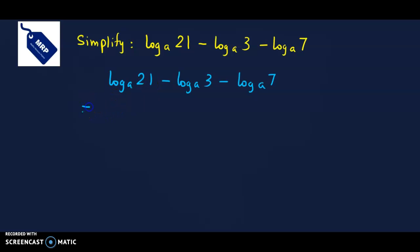Log of 21 base a minus log 3 base a minus log 7 base a. 21 we can factorize as 3 times 7. So we first factorize this: log of 3 times 7 base a, and these two terms we keep as is: minus log 3 base a minus log 7 base a. Now we will use the multiplication law: log of a times b is log a plus log b. So we get log 3 base a plus log 7 base a, and the remaining two log terms: minus log 3 base a and minus log 7 base a.